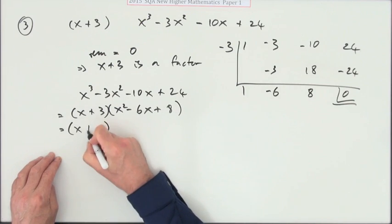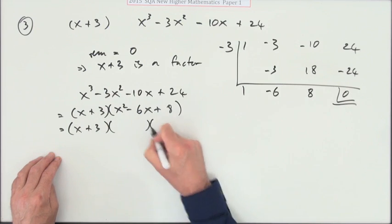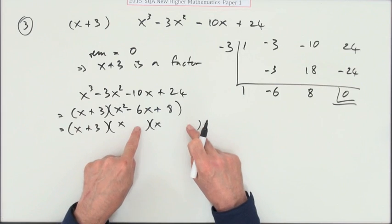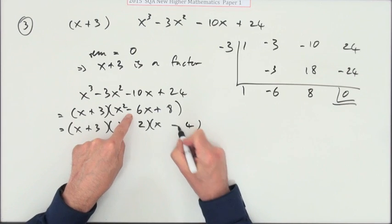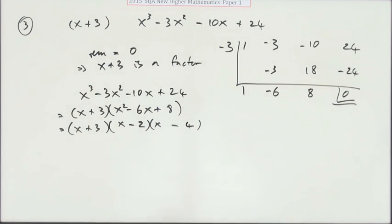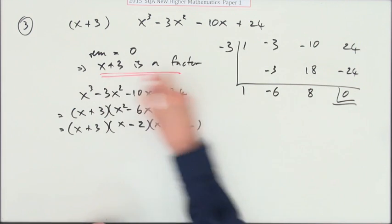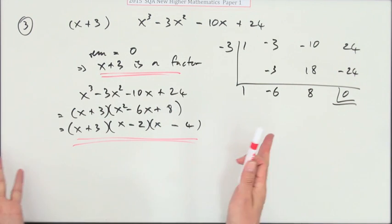And hopefully since it's paper one it's going to factorize again. x times x, factors of 8 that add to give 6 - that's 2 and 4. Make the big one negative? That says they're both the same, so they're both negative. There we go, four marks.